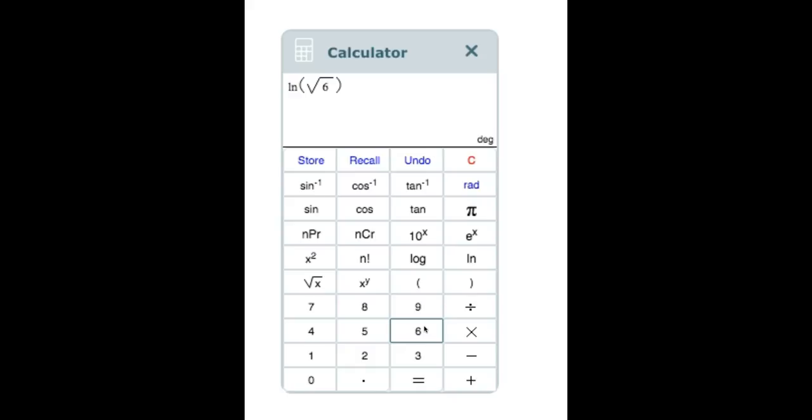Last, we click the equal sign button to evaluate our answer. The calculator gives us that the natural log of the square root of 6 equals .8958 and so on and so forth.